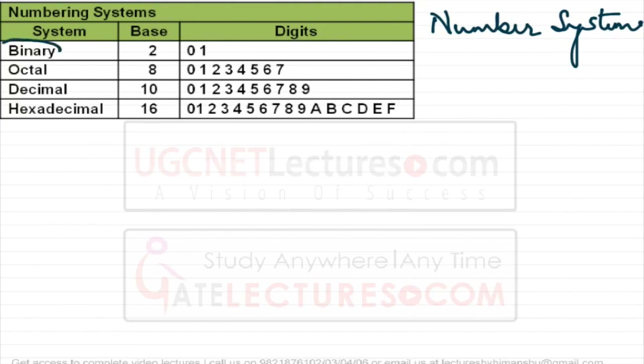Binary system has base 2. What does base mean? The base of a system is the number of symbols that we are using in that system to represent numbers. In binary system we are using only two digits.